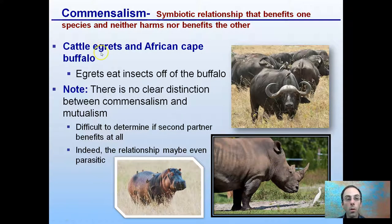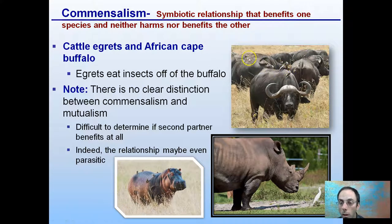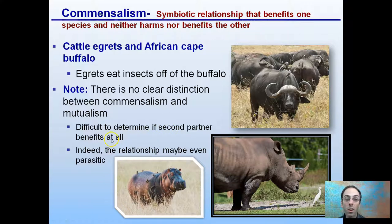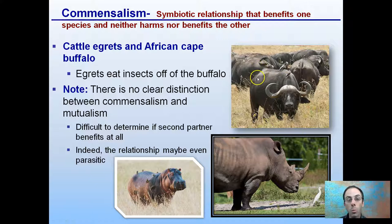Other examples would be cattle egrets and the African Cape buffalo. The egrets are birds that eat insects off the buffalo. But there's no clear distinction between commensalism and mutualism — commensalism benefits one species but neither harms nor really benefits the other. It's difficult to determine if the second partner benefits at all. The insects the egrets are eating are really not doing any harm to the Cape buffalo, but removing them isn't really offering a clear benefit either.